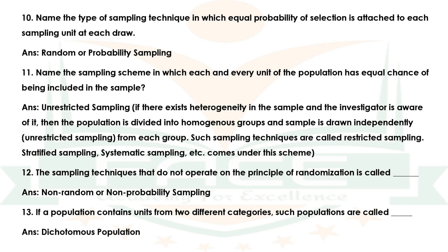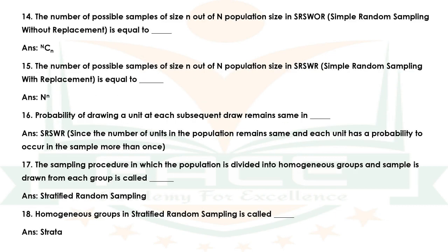Question 11 — Name the sampling scheme in which each and every unit of the population has an equal chance of being included in the sample. Answer: Unrestricted sampling. Note: If heterogeneity exists in the sample and the investigator is aware of it, the population is divided into homogeneous groups and a sample is drawn independently from each group. Such sampling techniques are called restricted sampling — stratified sampling, systematic sampling, etc. fall under this scheme. Question 12 — The sampling technique that does not operate on the principle of randomization is called dash. Answer: Non-random or non-probability sampling. Question 13 — If a population contains units from two different categories, such a population is called dash. Answer: Dichotomous population.